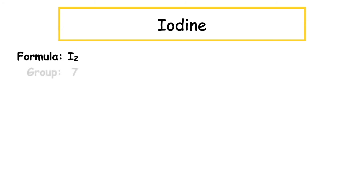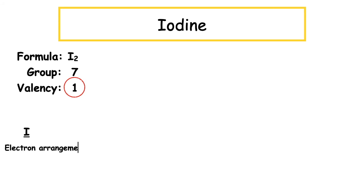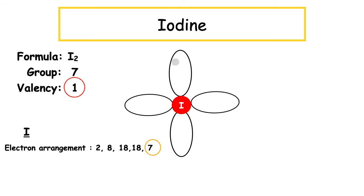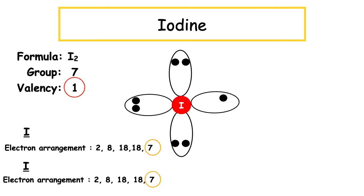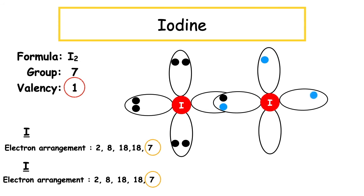Iodine has the chemical formula I2, found in Group 7 with a valency of 1. Iodine has the electron arrangement 2, 8, 18, 18, 7. We circle the outermost occupied energy level and draw a petal diagram, popping in the seven outer electrons sitting singly before doubling up. From the formula we have another iodine atom with the same arrangement — another petal, overlapping the unpaired electron. We again get a shared pair of electrons representing the covalent bond. As there is only one overlap showing one shared pair, iodine has one single covalent bond.